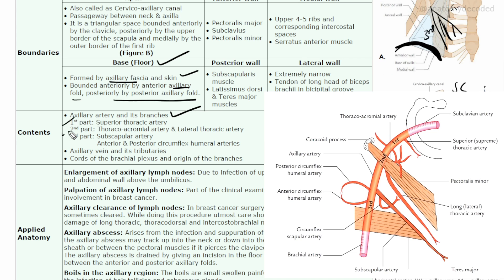The three parts of the axillary artery have specific branches: the first part has one branch — the superior thoracic artery; the second part has two branches — the thoracoacromial and lateral thoracic arteries; and the third part gives the subscapular artery and the anterior and posterior circumflex humeral arteries.